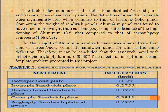The table summarizes the deflection obtained for solid panels and various types of sandwich panels. The deflection for sandwich panels was significantly less compared to the isotropic solid panel. Comparing weight, the aluminum panel was found to have much more weight than carbon epoxy composite due to aluminum's higher density of 2.8 g/cc compared to carbon epoxy composite at 1.58 g/cc. The weight of the aluminum sandwich panel was almost twice that of the carbon epoxy composite sandwich panel for almost the same deflection. Therefore, the sandwich panel with isotropic angle-ply laminate at 45 degrees has an optimum design for the plate problem presented in this project.